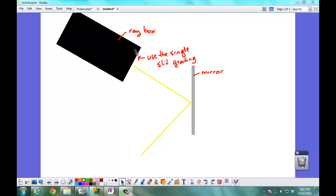The first step is to set up the ray box. You can see I've got the ray box set up here. I've also got the mirror set up at an angle and I've used a single slit grating so that a single ray of light is hitting the mirror.